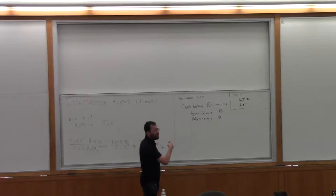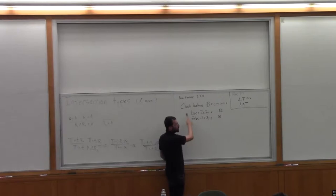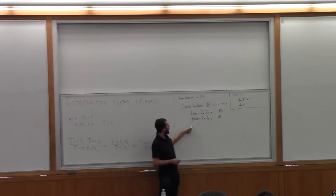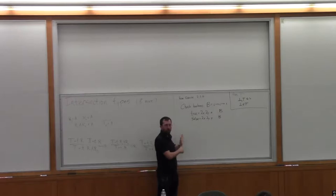It's a question about the church booleans. In simply typed lambda calculus, we can represent the booleans by the type Yoda → Yoda → Yoda. It has two elements, true and false. True is λx.λy.x and false is λx.λy.y. We're going to look at this in the type refinement system we defined last time, where we have some refinements of the atomic type Yoda and some subtyping relationship. Here I'll take the simplest case: two atoms, bottom and top, where bottom is below top.